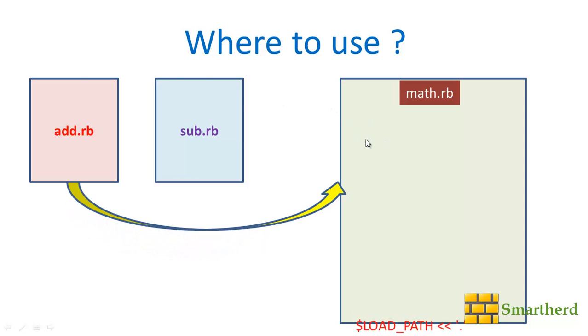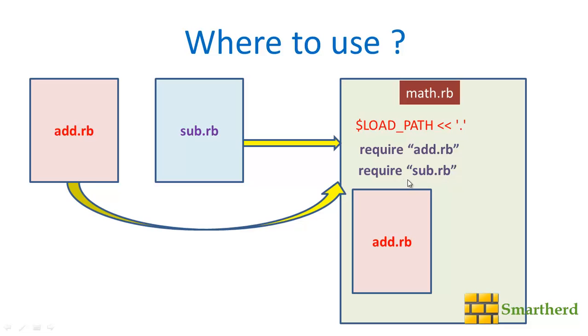Now first of all we have to specify the path. So $LOAD_PATH, we are looking for this add.rb file in the same Ruby file where our math.rb is stored. Now next, require add.rb. This will put this add.rb file into this math.rb. Now next we have to incorporate this sub.rb file here. For that again we have to write require sub.rb. This will incorporate sub.rb here.